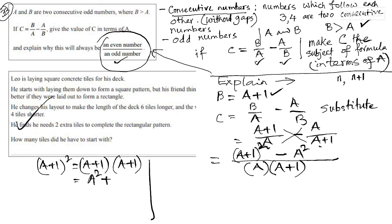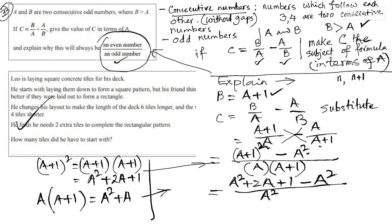And if you expand it, that'll give you A squared plus two A plus one. Work it out by yourself. And if I expand A times A plus one, that'll give me A squared plus A. So, I am going to use those interim values, which is A squared plus two A plus one minus A squared divided by A squared plus A.